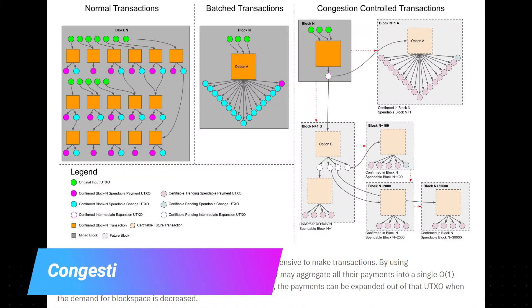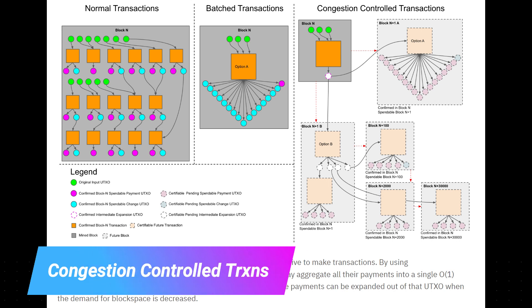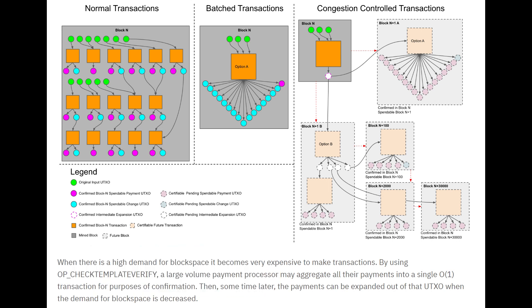Let's talk about the use cases and make this more concrete. One is congestion-controlled transactions — the ability to batch multiple payments into a single transaction and then expand those payments back out later, perhaps when the mempool is less congested. This is interesting for users of the network because you want to minimize transaction fees, and this could certainly help in that regard.